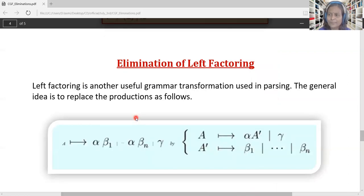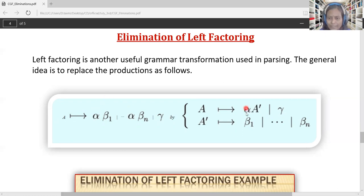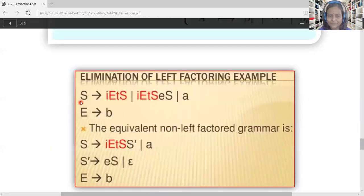Now let us go to elimination of left factoring, which is a bit easier than left recursion. In left factoring, there are productions that always start with the same prefix alpha: A → αβ | αγ | ... plus other productions. The beta portions differ; gamma denotes productions without left factoring. To rewrite: A → α A' | γ, introducing a new non-terminal A dash. Then A' → β | γ_remaining, writing all beta terms alternatively.